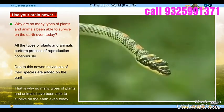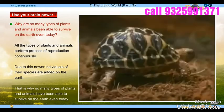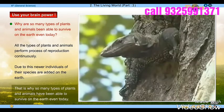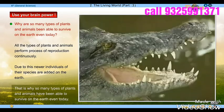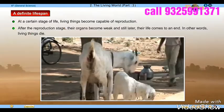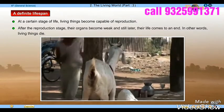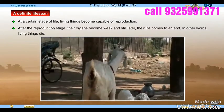Due to this, newer individuals of their species are added on the earth. That is why so many types of plants and animals survive — each living thing has a definite life span.